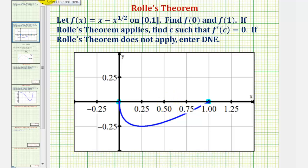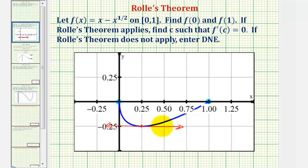Looking at this graphically, it appears that the value of c we're looking for will be 0.25, or one-fourth, where the slope of the tangent line would be zero. And therefore, the derivative function would be equal to zero at this value. Let's go ahead and verify this.